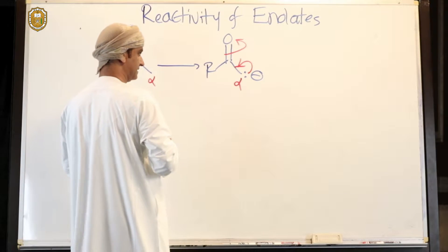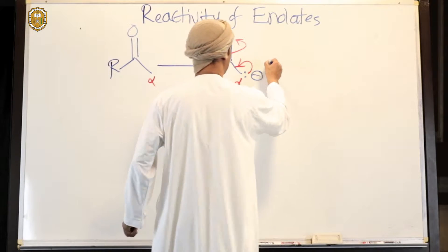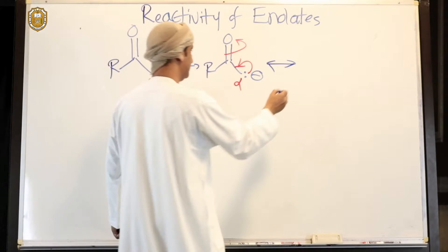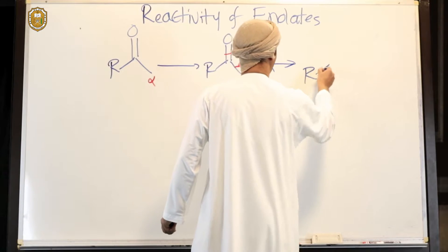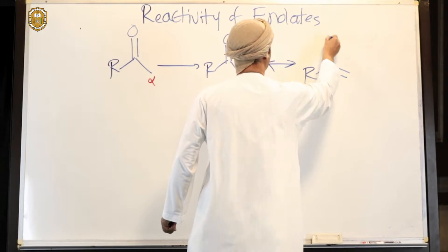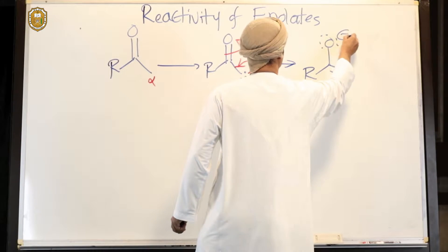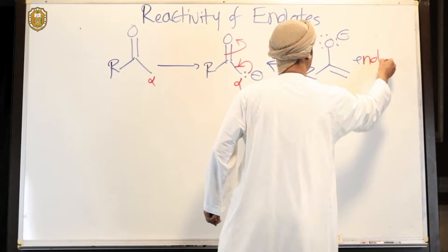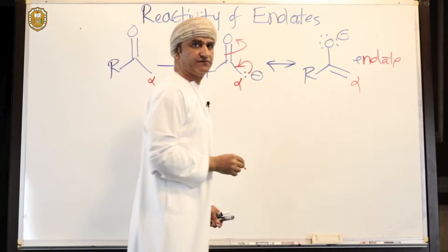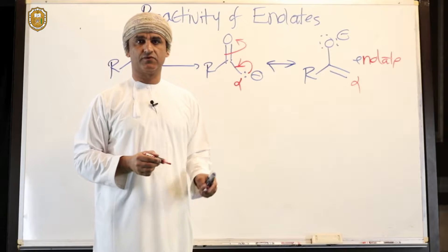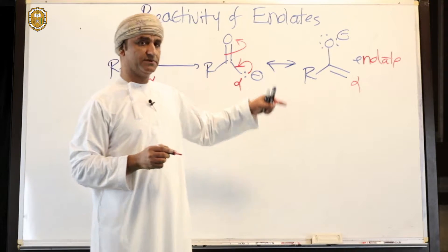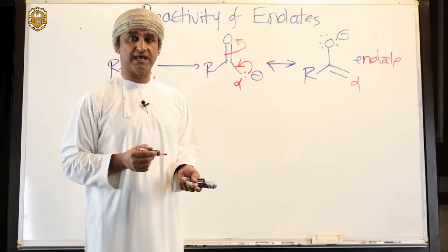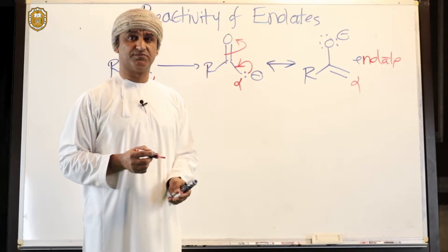The alpha carbanion can undergo resonance to form the corresponding enolate, as we have seen in a previous scheme. Resonance stabilization of the alpha carbanion gives the corresponding enolate, whose structure is shown here. Enolates are nucleophilic at both oxygen and carbon.